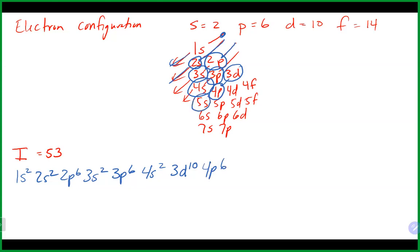Continuing on, we go back to the s here at 5s2. Then we zigzag to 4d10. I lost track but counting up: 10, 20, 30, 36, 38, 48 — so we're at 48 at that point.